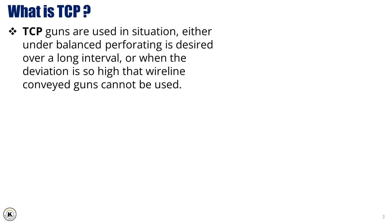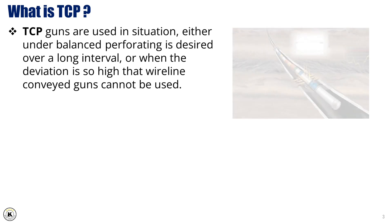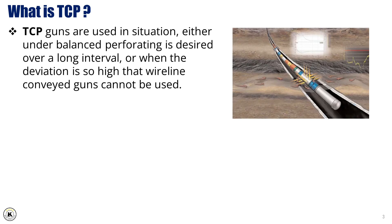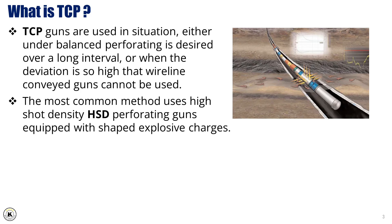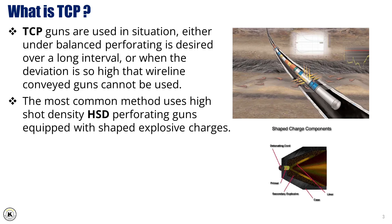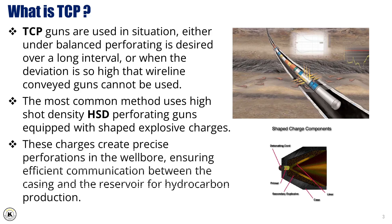TCP guns are used in situations where either underbalanced perforating is desired over a long interval, or when the deviation is so high that wireline conveyed guns cannot be used. In these cases, TCP provides a reliable solution for reaching the desired reservoir zones. The most common method uses high-shot-density (HSD) perforating guns equipped with shaped explosive charges, which create precise perforations in the wellbore, ensuring efficient communication between the casing and the reservoir for hydrocarbon production.